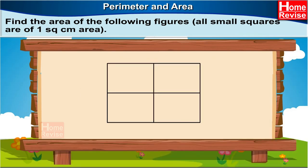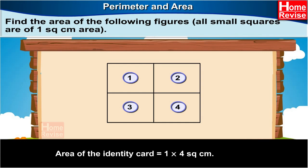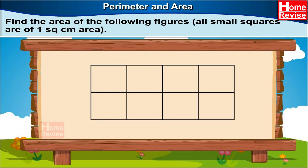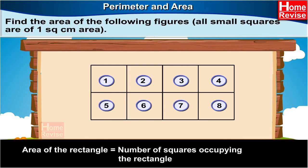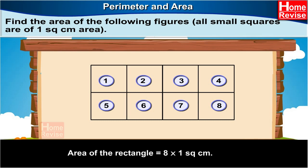Number 2: Here, we have 4 squares and each square has an area of 1 square centimeter, which means the area of the square would be 4 into 1 square centimeter, which is equal to 4 square centimeters. Let us see the next figure. It is a rectangle with 8 squares of 1 square centimeter area. Area of 1 square is 1 square centimeter, so area of 8 squares would be 8 into 1 square centimeter, which is equal to 8 square centimeters. So, the area of the rectangle is 8 square centimeters.